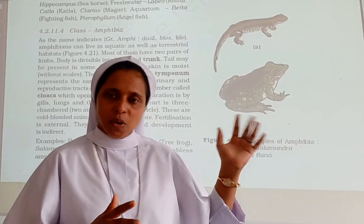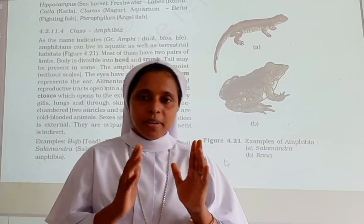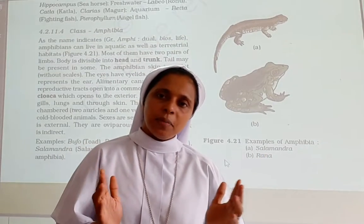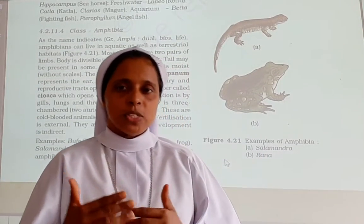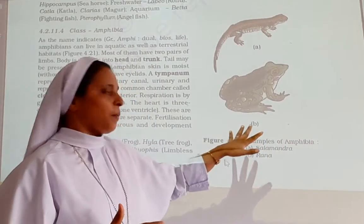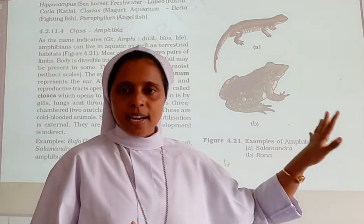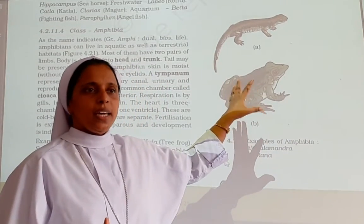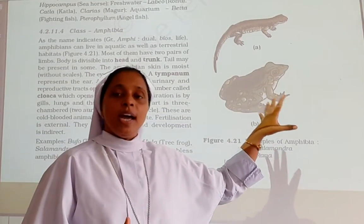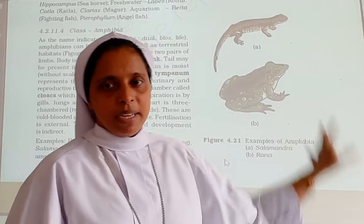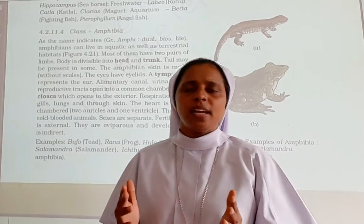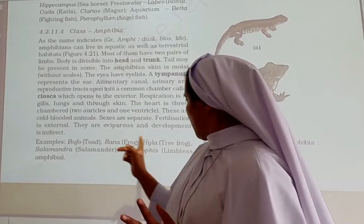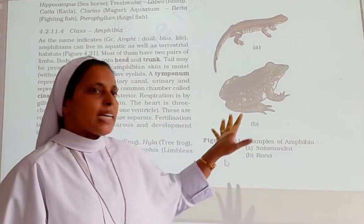They are cold-blooded animals, meaning they can adapt their body temperature according to the surrounding climate. The sexes are separate, fertilization is external, they lay eggs outside their body — they are oviparous, egg-laying animals. Development is indirect. Examples include Bufo, Rana, and Salamandra — all examples of Class Amphibia.